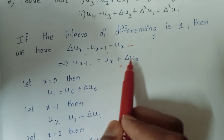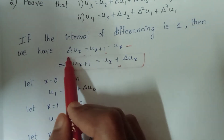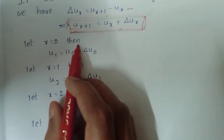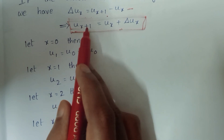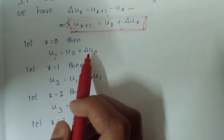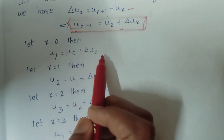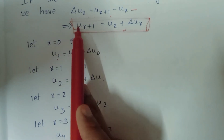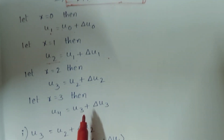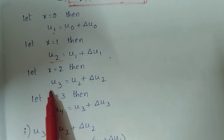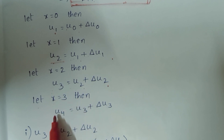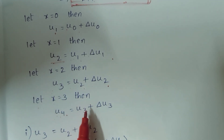Using the formula ux plus 1 equal to ux plus delta ux: for x equal to 0, u1 equal to u0 plus delta u0. For x equal to 1, u2 equal to u1 plus delta u1. For x equal to 2, u3 equal to u2 plus delta u2. For x equal to 3, u4 equal to u3 plus delta u3.